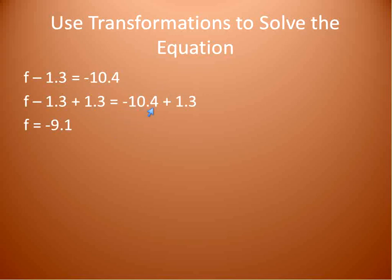When you have -10.4 and you're adding a positive 1.3, you'll end up with a smaller negative number, which is kind of a funny way to think of it. But -10.4 + 1.3 will give us -9.1. Again, if I'm not as comfortable with my adding and subtracting of negative numbers, I can go back and check my work. I take my original equation.